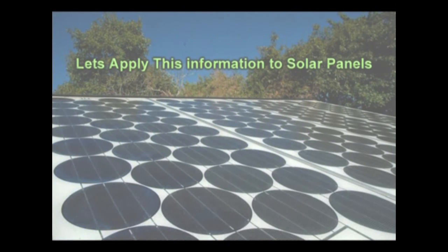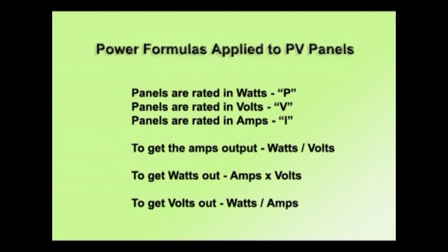Now let's show how this information applies to solar panels. Solar panels are rated in watts, volts, and amps. To get the amps out, take the total wattage and divide it by the volts. To get the total watts, take the rated amps and multiply by the volts. To get the volts output, take the watts and divide by the amps. The most important one is watts out equals amps times volts.